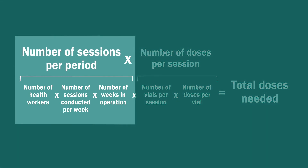To determine the number of sessions per period, multiply the number of health workers at your facility by the number of sessions conducted by each health worker per week, and the number of weeks in operation during the given period. Alternately, you might use the number of posts or sites in your area, rather than the number of health workers, and the number of sessions conducted at each site per week.